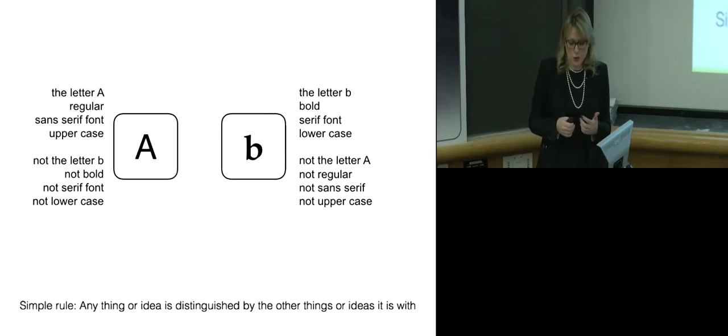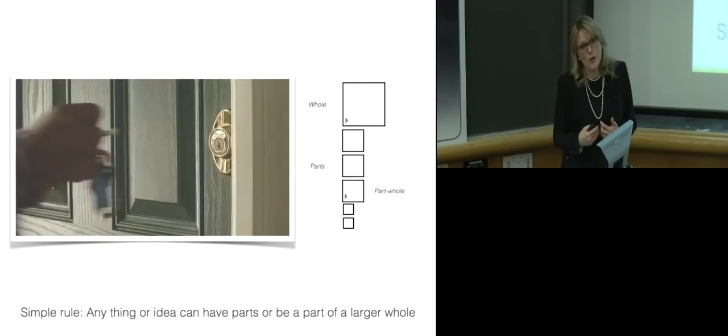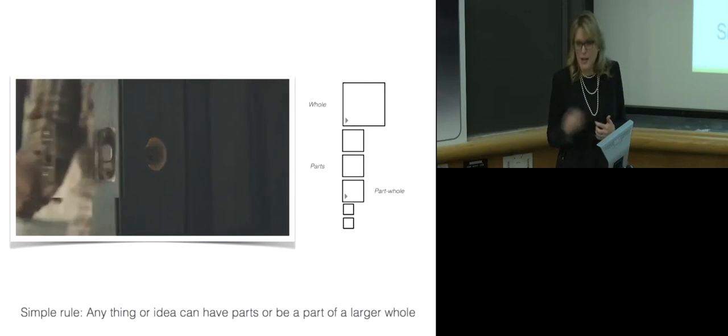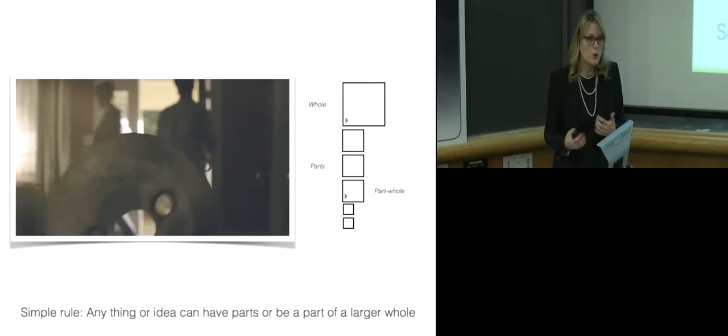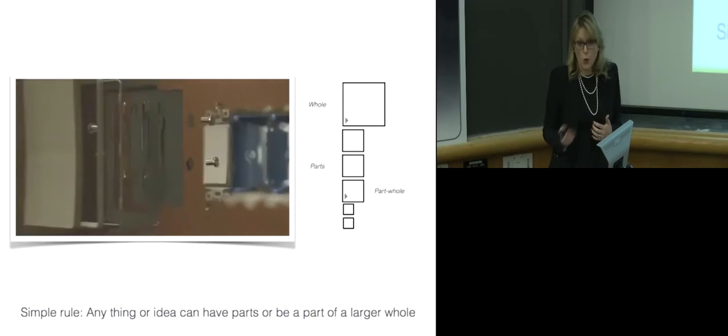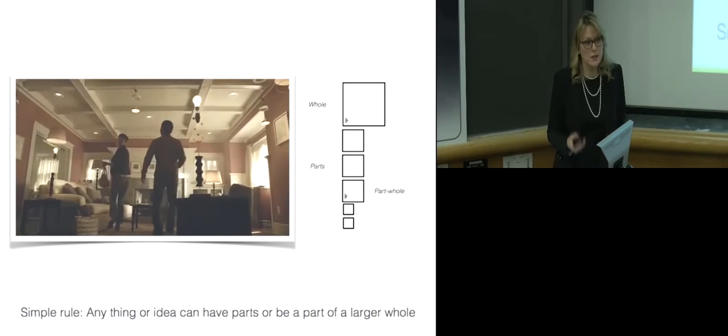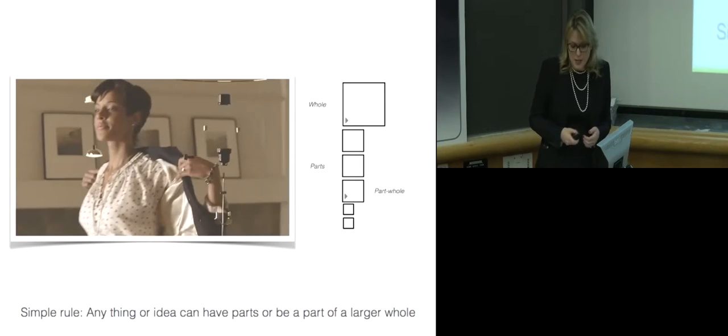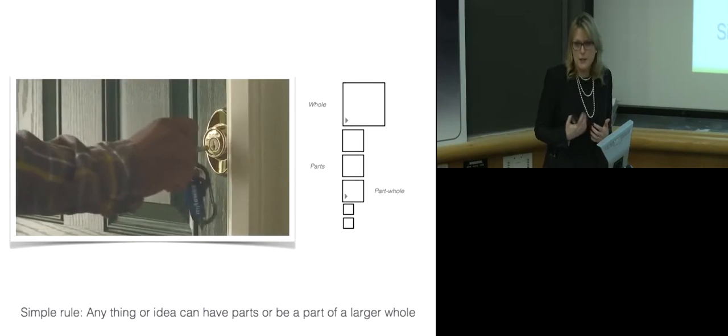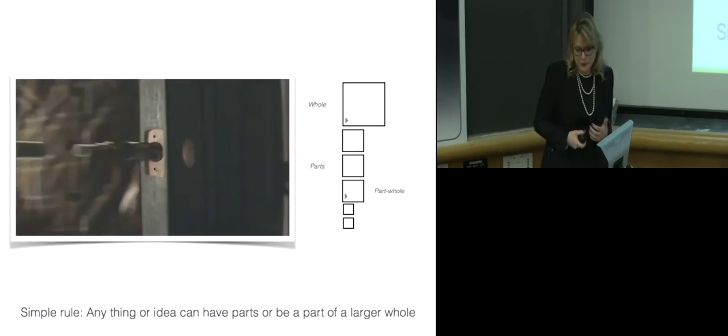Each DSRP rule contains two co-implying elements. The existence of one element implies the other and vice versa. The distinctions rule: the two co-implying elements of distinctions are identity and other. We're always identifying things or ideas. And when we do that, we're distinguishing them from other ideas or things. Making distinctions involves drawing boundaries, which is obviously an essential practice for systems thinking. Systems: Part and whole are the co-implying elements of the systems rule. You can't have one without the other. We're constantly organizing ideas into systems of part and whole. It's important also to be aware that anything is simultaneously a part and a whole.